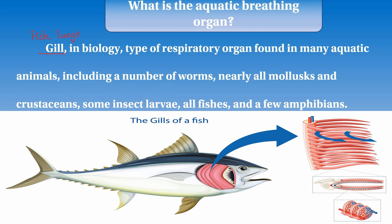We have a feathery structure in this animal — a feathery gill structure. In this feathery structure, there is a large surface area below it for gaseous exchange. There are several outer surfaces that support this exchange.